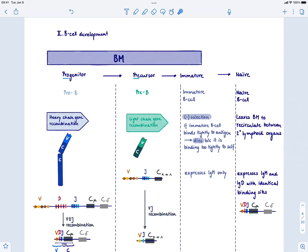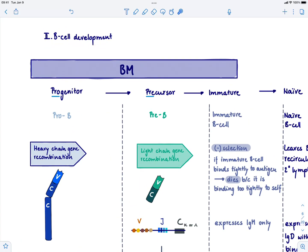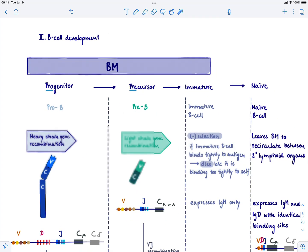Let's get started with B cell development. We want to figure out how the B cell makes its B cell receptor and how it progresses through several stages, becoming a sophisticated cell able to make antibodies.